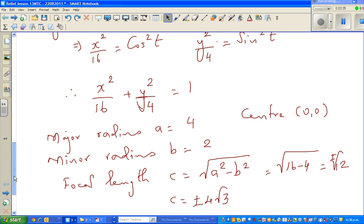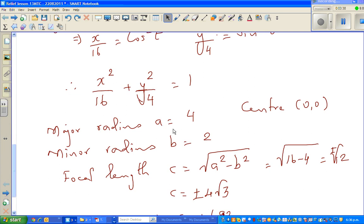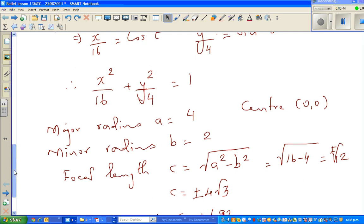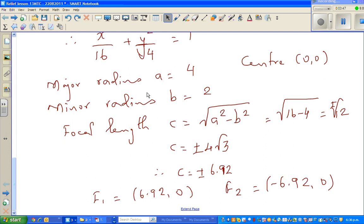So you all know these things: major radius is 4, minor radius is 2 and focal length is plus or minus square root of... sorry 12 and so you can graph this, you already know that.